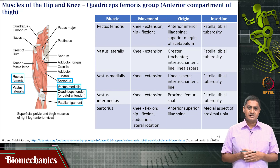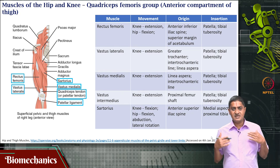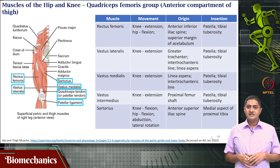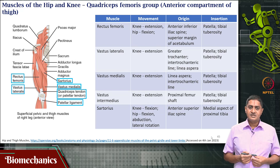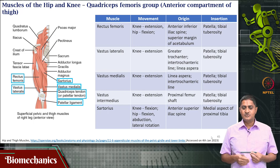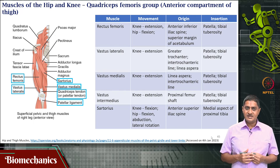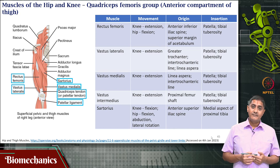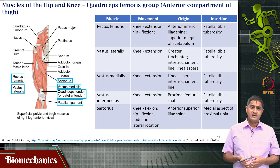Knee extension means the knee in the position when the person is standing with the leg straight — that is the extended knee. This means that the tendon for this will have to attach on the anterior side, and will have to pass through the patella, which is the knee cap. The patella is a special sesamoid bone embedded within the quadriceps tendon, which then continues on to become the patellar ligament, which then attaches to the tibial tuberosity.